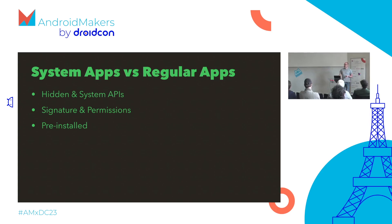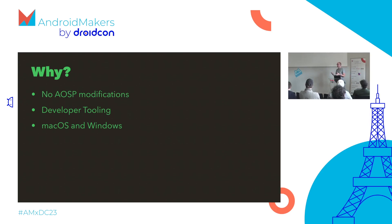Whether they're pre-installed or not doesn't matter anymore. If you're signed with the system certificate, you can be installed afterwards — which makes working with this on emulators and developer boards much, much easier. You don't have to push them into the write-only partition and things like that. Why not just set up AOSP and work from there? Well, you don't want to do modifications on AOSP because it's costly once you have to upgrade to the next Android version.